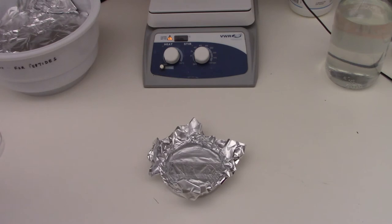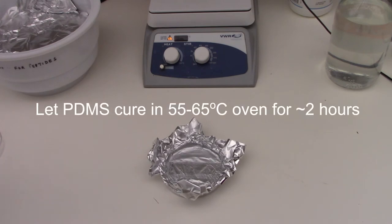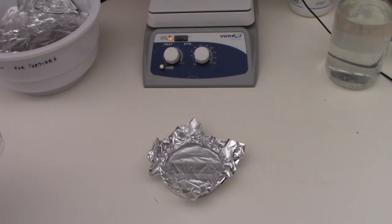And then last but not least, we'll just put this in the oven between 55 to 65 degrees Celsius for about two hours. If you have a 3D printed mold, check the temperature limits of that 3D printed plastic because you may have to use a lower temperature.